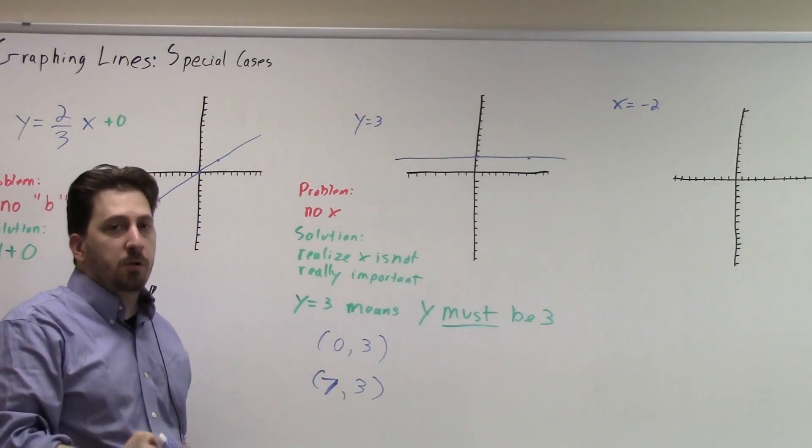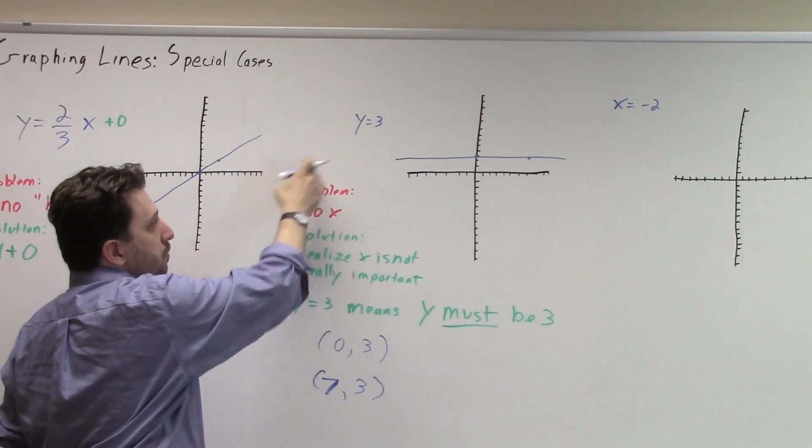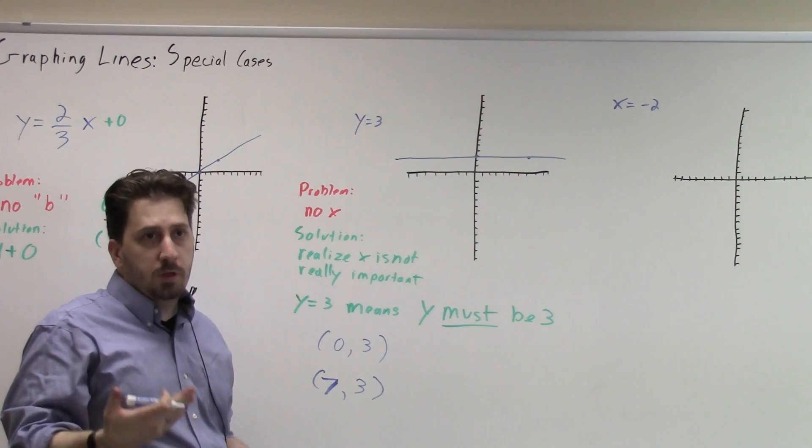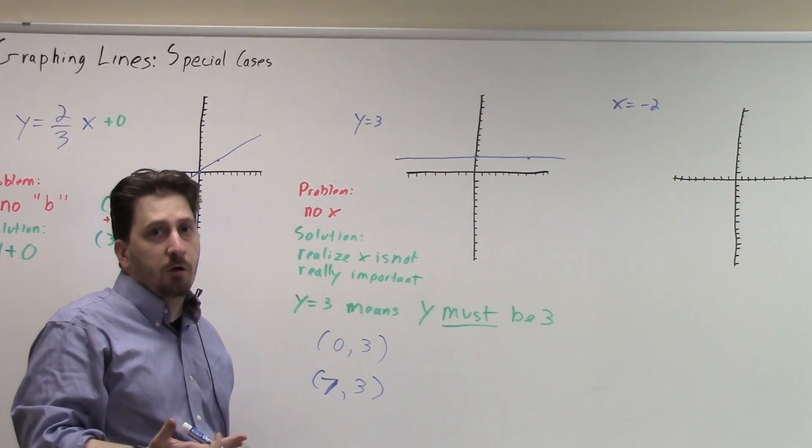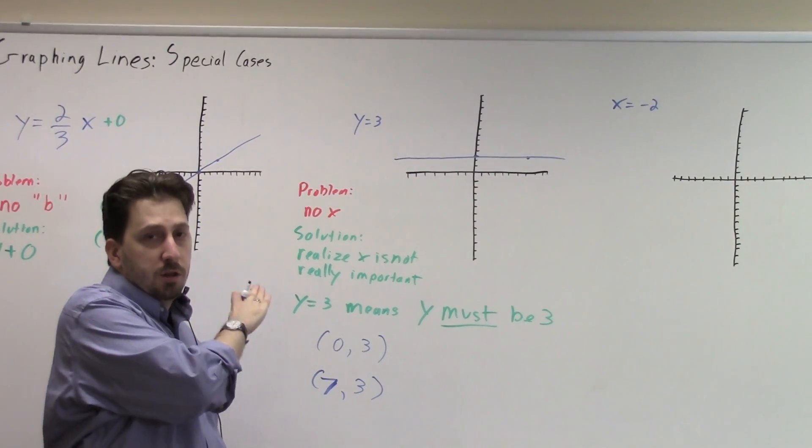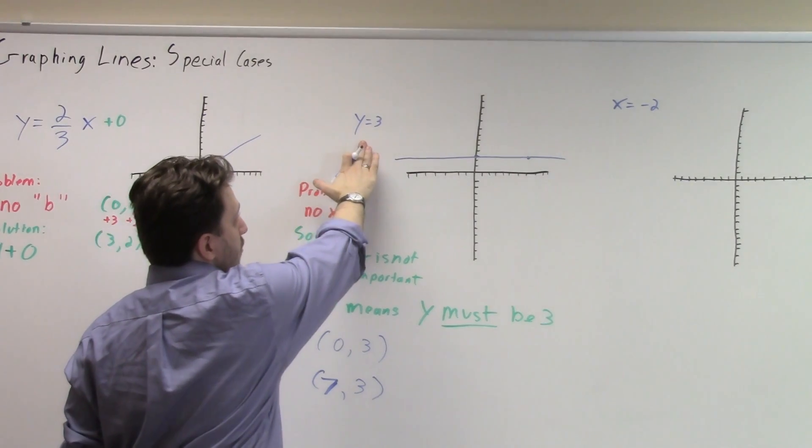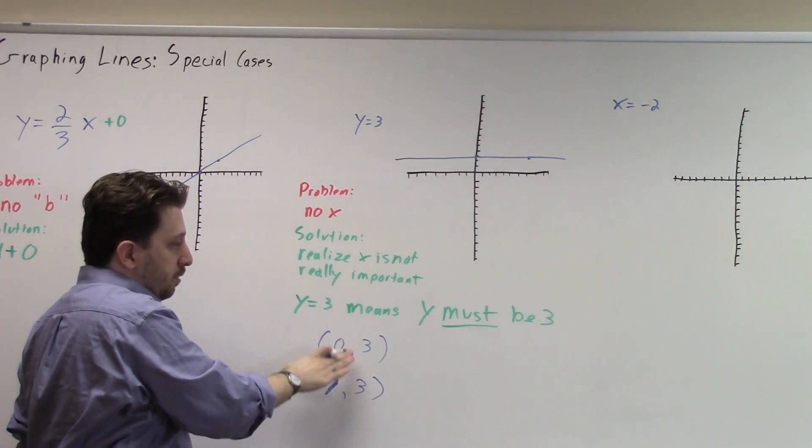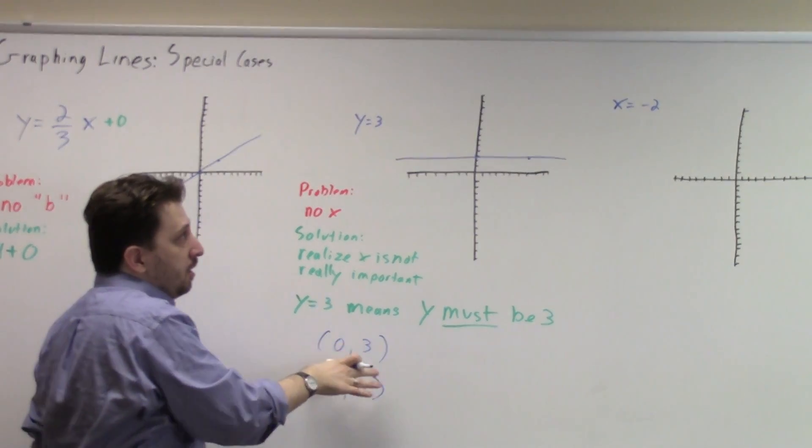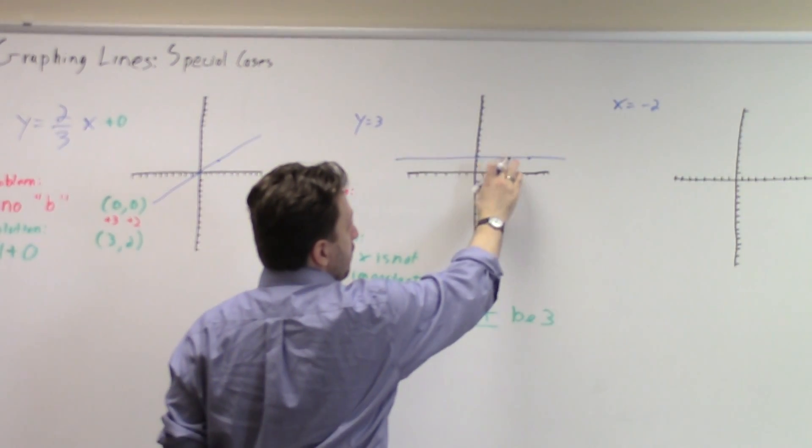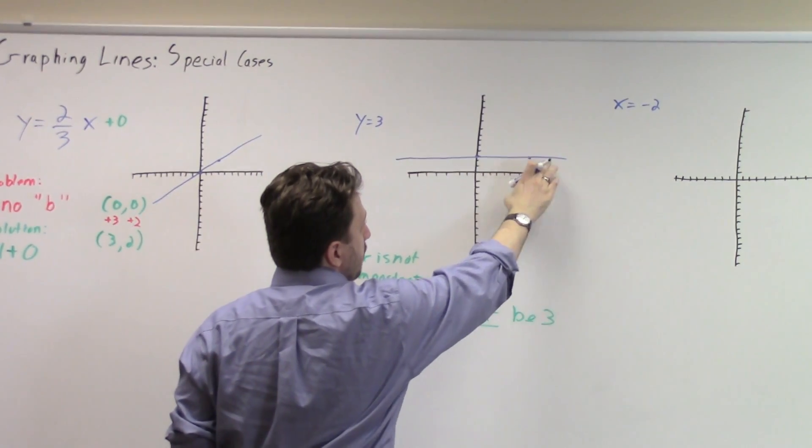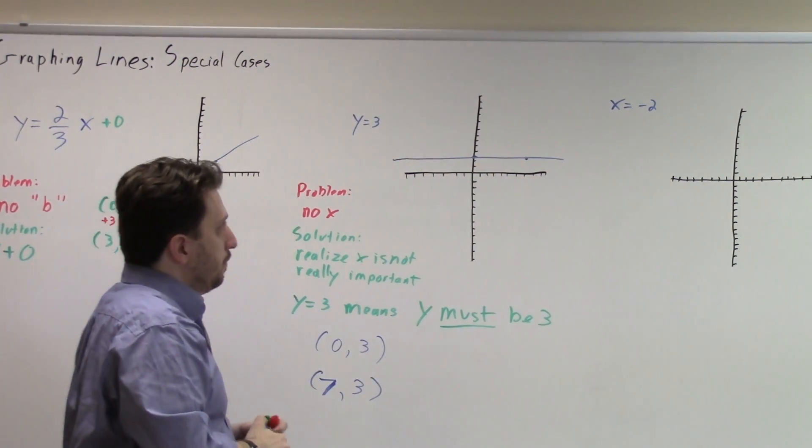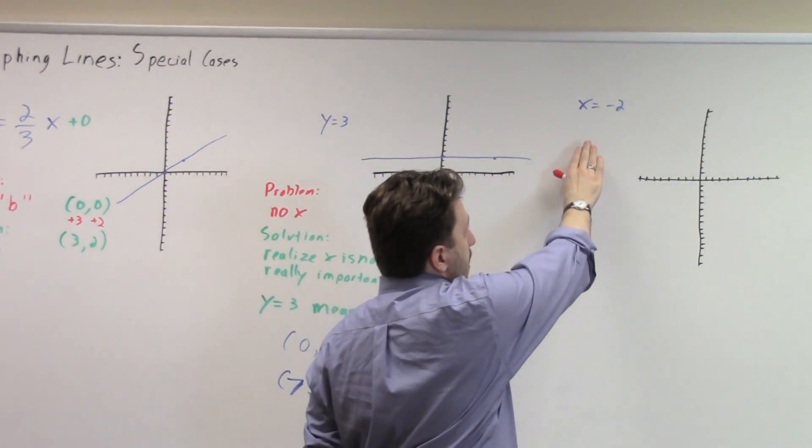Now eventually you'll get to the point where you realize when you have something like y equals three, it's always going to be a horizontal line. But if you're not sure or you're not confident of yourself, do this. Just remember when it says y equals three, that means that y has to be three. As long as our y value is three, we'll be happy. And when we see that on our graph, if we look at any other point in the graph, all of our points in the graph have our y value of three.